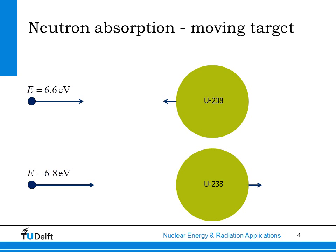Now imagine a neutron with a little bit lower energy than the resonance peak energy, say 6.6 eV, but with a uranium-238 nucleus moving towards the neutron. In this case, the relative velocity between the neutron and the target nucleus can be such that the effective kinetic energy of the neutron is 6.7 eV, and also in this case the neutron can easily be absorbed by the uranium-238 nucleus.